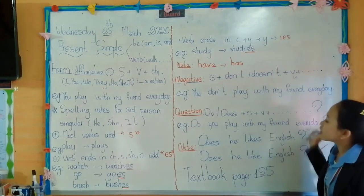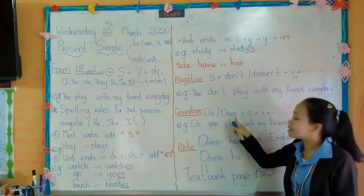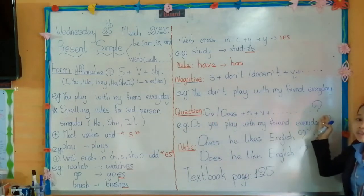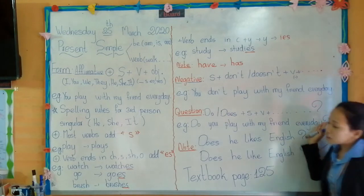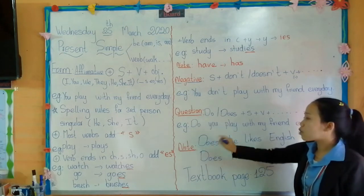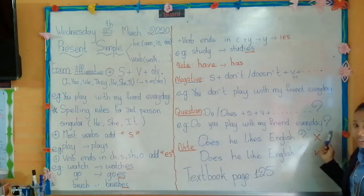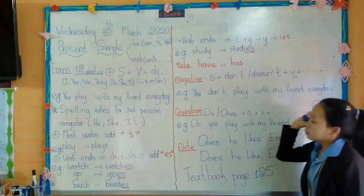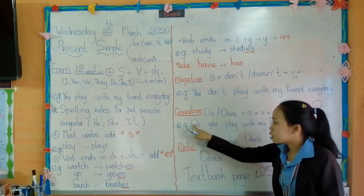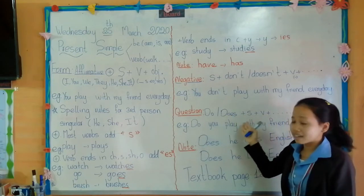So when you change the sentence to a question, put do or does at the beginning of the sentence, then the subject, then the verb, and don't forget the question mark. The question mark is most important for making a question. For example: Do you play with my friend every day? When you use subject I, you, we, they — put do. But if you use with he, she, or it — use does.